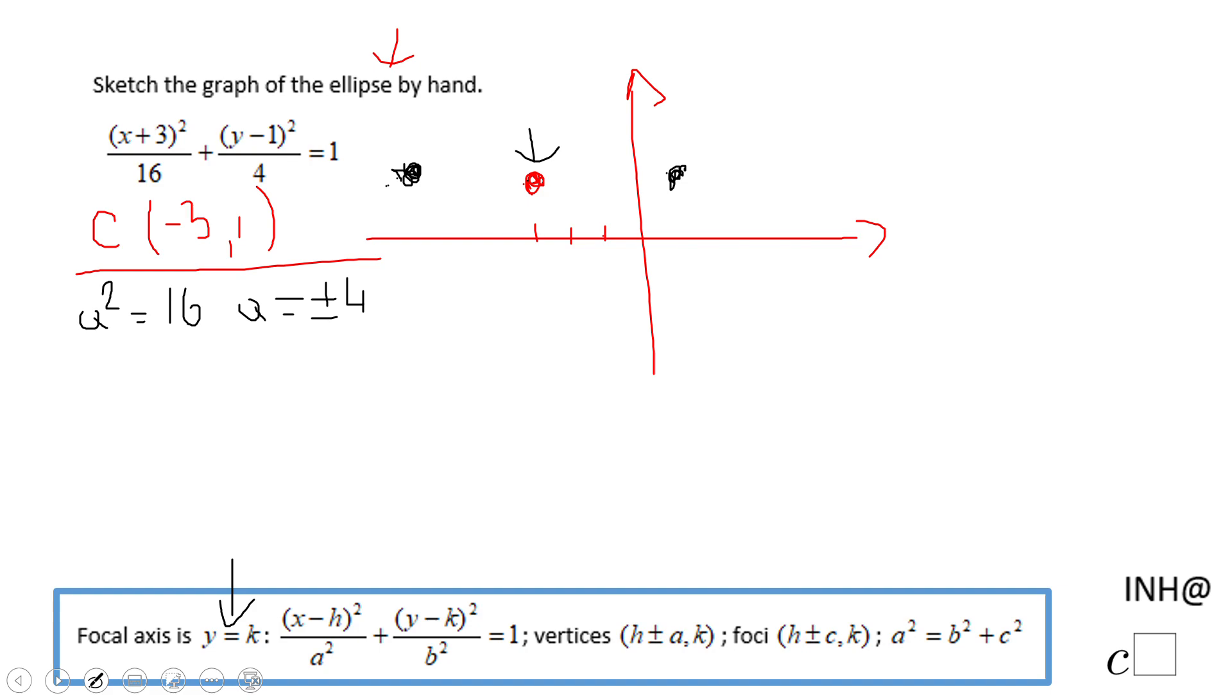And we're going to do the same thing with b. So we're going to take this b-square now, which is 4. That will tell us b equals plus and minus 2. And from this red center of the ellipse, we're going to move 2 down. So from negative 3 and 1, if I move 2 down, that will be negative 3 and